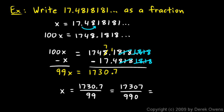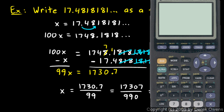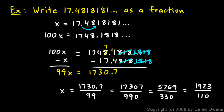Both 17307 and 990 are divisible by 3. Dividing 17307 by 3 gives 5769, and 990 divided by 3 gives 330. Both of those are divisible by 3 again, and dividing top and bottom by 3 gives 1923 over 110. Checking on the calculator: 1923 divided by 110 gives 17.4818181 and so on — the correct answer. So there you have it: converting repeating decimals to fractions using this technique.